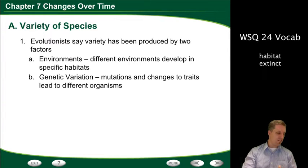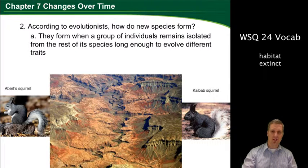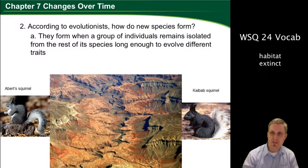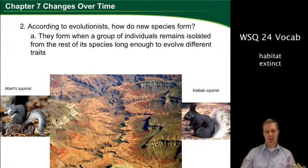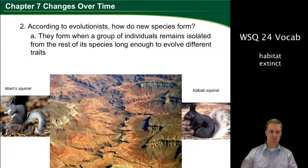So those are the two things evolutionists say lead to the different types of organisms. According to evolutionists, how do species form? They form when a group of individuals remains isolated from the rest of its species long enough to evolve different traits. Let's take an example: we have the Kaibab squirrel and the Abert squirrel.